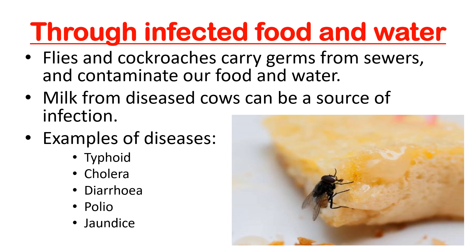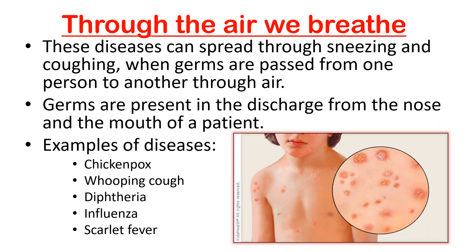Diseases through infected food and water: flies and cockroaches carry germs from faeces and contaminate our food and water — 'contaminated' means infected. Milk from diseased cows can also be a source of infection. Some examples of such diseases are typhoid, cholera, diarrhea, polio, and jaundice.